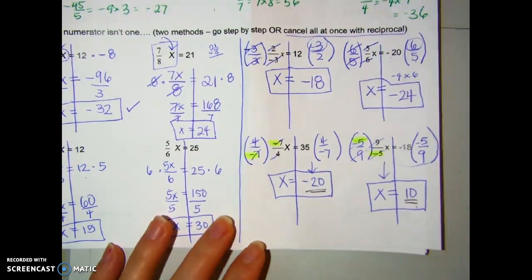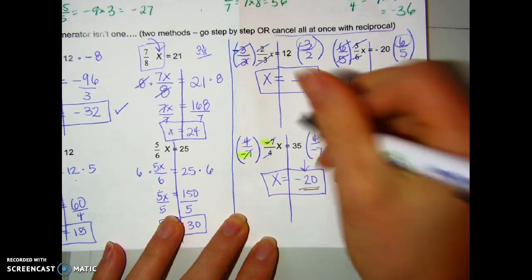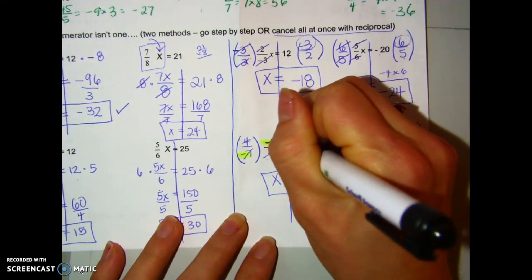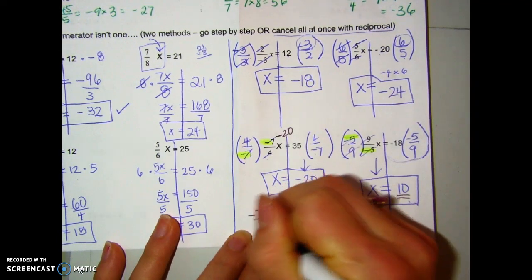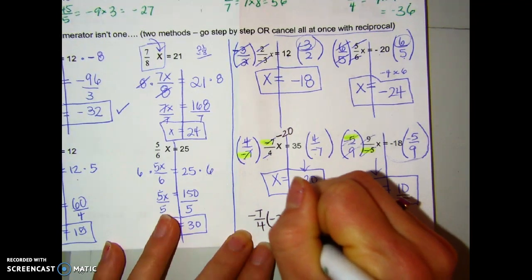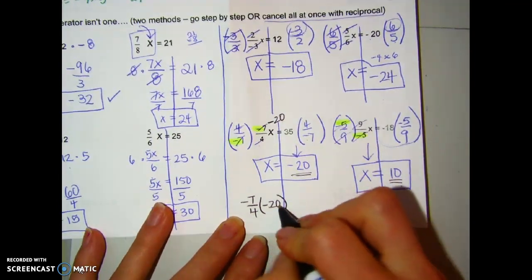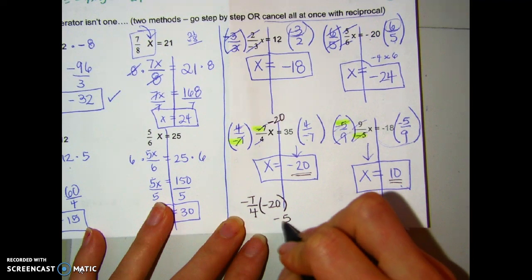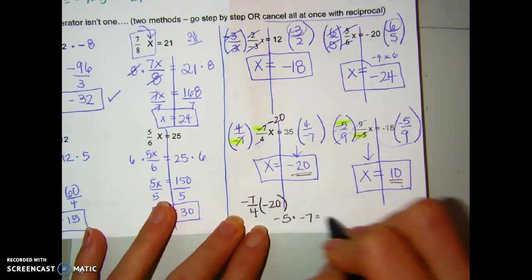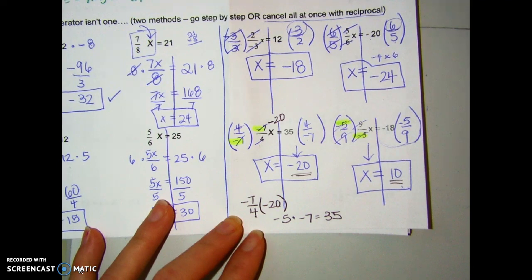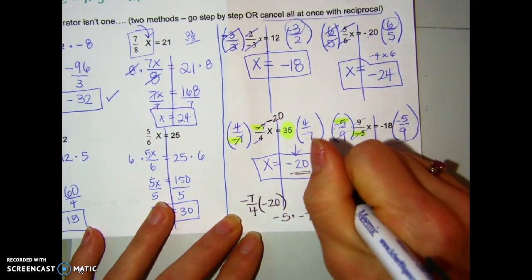Remember to plug the answer back in to check. If I plug negative 20 back in, I'm doing negative 7-fourths times negative 20. Using the shortcut: negative 20 divided by 4 is negative 5, and negative 5 times negative 7 equals 35 — which is right here what we were trying to get. So I know it works. That's how you check your answers.